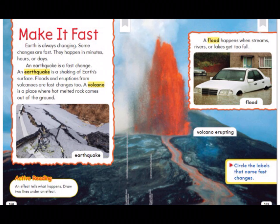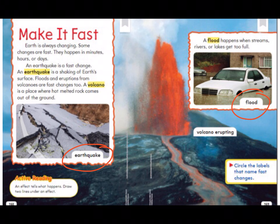Follow along as I read. Earth is always changing. Some changes are fast — they happen in minutes, hours, or days. An earthquake is a fast change; it is a shaking of Earth's surface. Floods and eruptions from volcanoes are fast changes too. A volcano is a place where hot, melted rock comes out of the ground. We are going to circle the names that make fast changes: earthquake, flood, and volcano erupting.